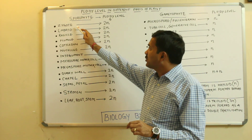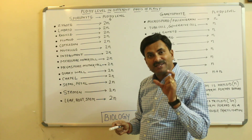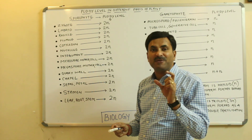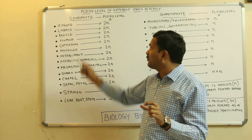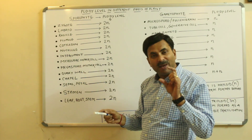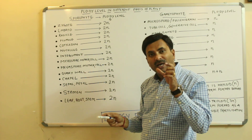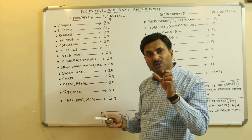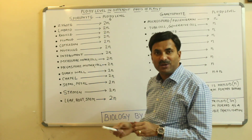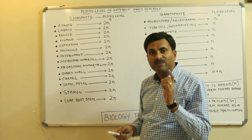Now, zygote. As we know, the zygote is the result of fertilization. When a male gamete and a female gamete fuse together, a zygote is formed. The male gamete is haploid and the female gamete is also haploid. So haploid and haploid fuse together to form a diploid structure, and that diploid structure is called the zygote — that's why the zygote has the ploidy level of 2N.